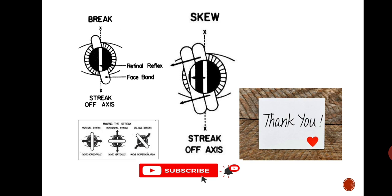This is what we all know as skew movement — if you scope off axis there is a skew movement. Even if you haven't detected a cylinder power while scoping, or if you've found a spherical power like minus 1 DSph, you should confirm whether there is any hidden oblique cylinder by doing the straddling technique at 45 degrees and 125 degrees. Always confirm the axis first, and then go for the cylindrical power.